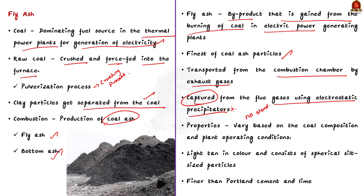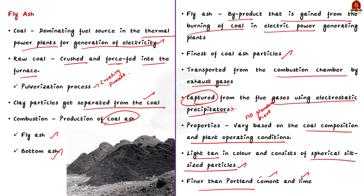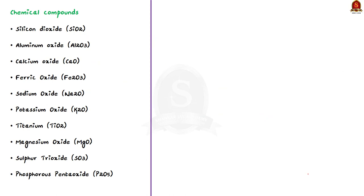Fly ash is generally light tan in color and mostly consists of silt-sized spherical particles. It is typically finer than Portland cement and lime. It contains a substantial amount of chemical compounds including silicon dioxide, aluminium oxide, calcium oxide, ferric oxide, sodium oxide, potassium oxide, titanium, magnesium oxide, sulfur trioxide, and phosphorus pentoxide.